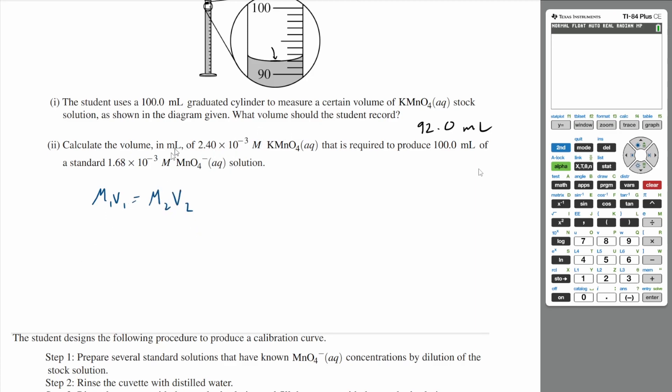For dilution problems, you should probably use M1V1 equals M2V2. So let's say our M1 is going to be the potassium permanganate and our M2 is going to be the permanganate solution.